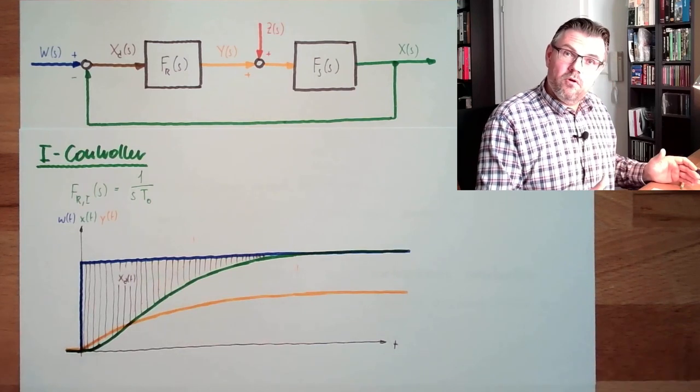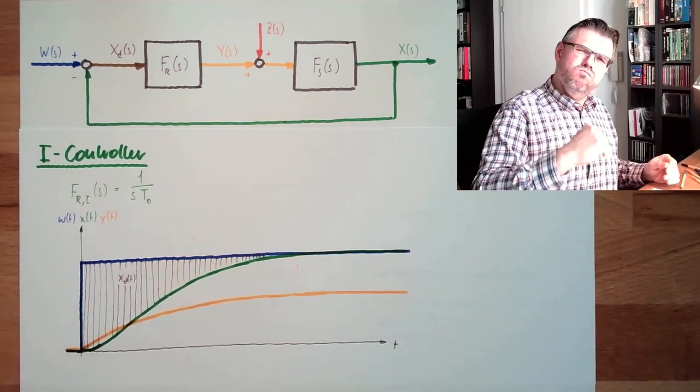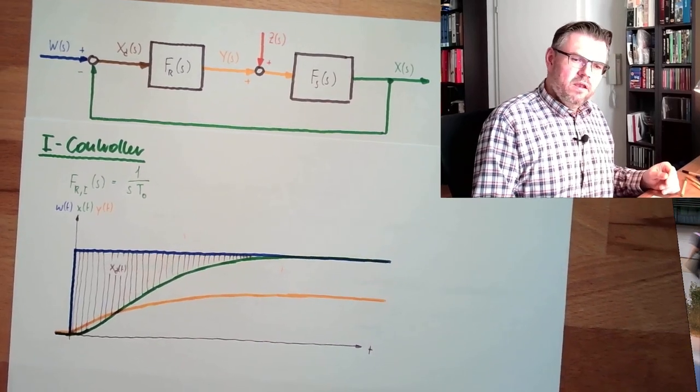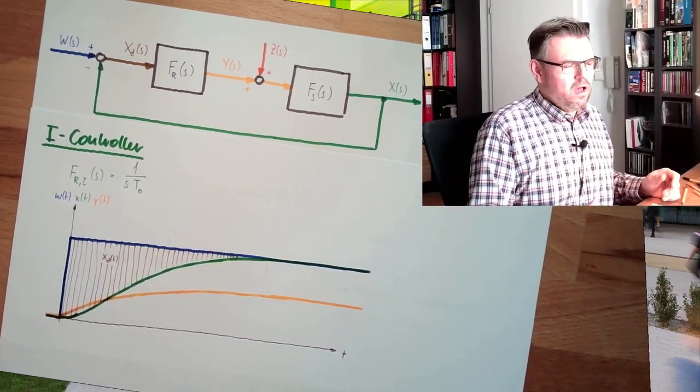Remember the P-controller? In the beginning, it was fast. But in the end, it lost interest and said, ah, I've done enough.